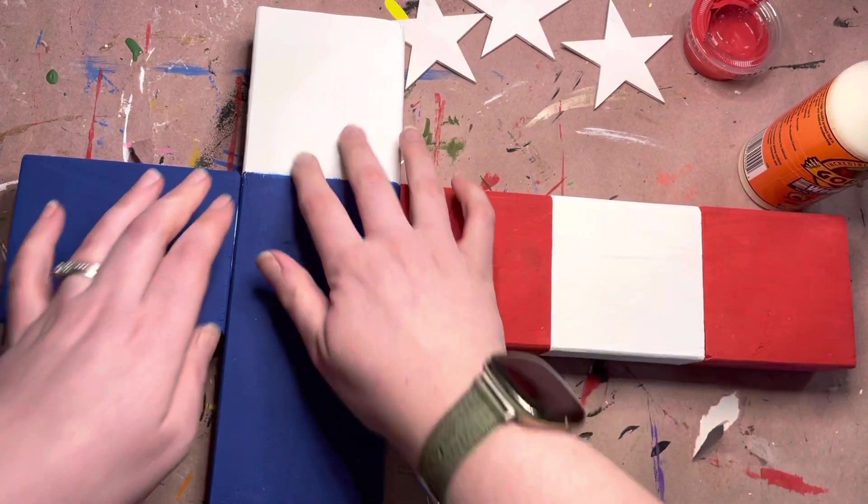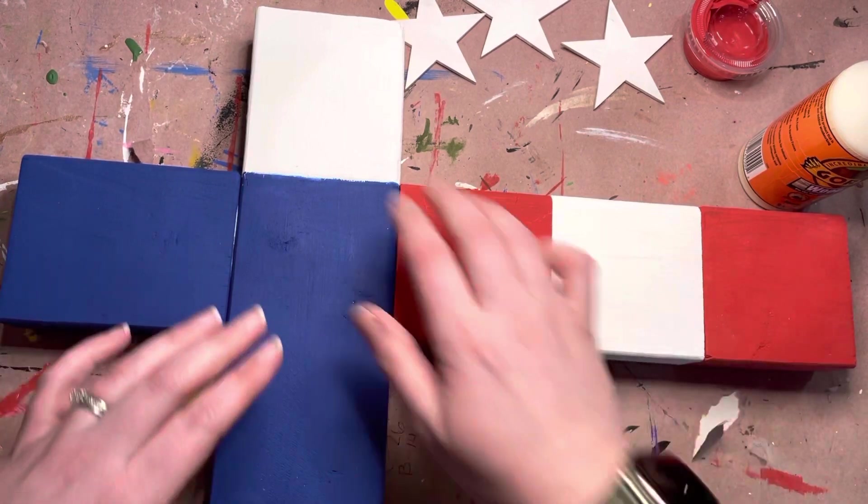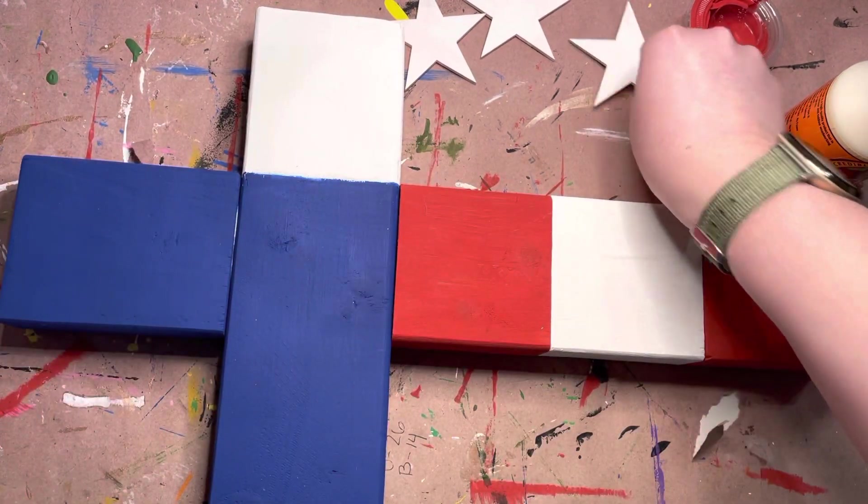You kind of see all those pieces are together. And just make sure you're doing them color coordinated. So red, white, red, white. And then you can go ahead and put your stars on.